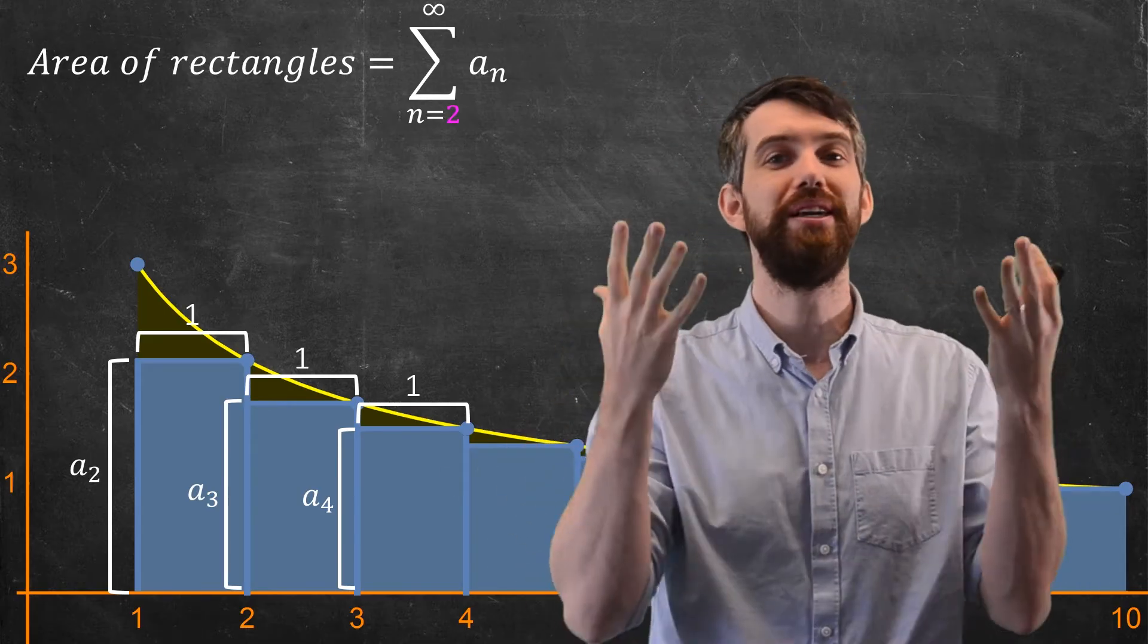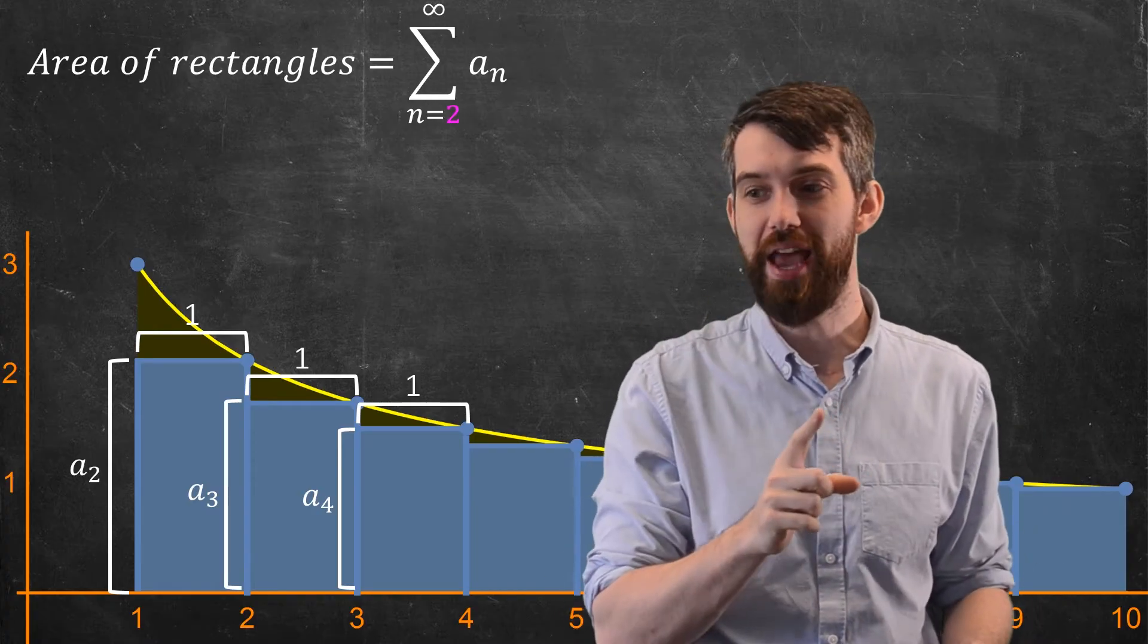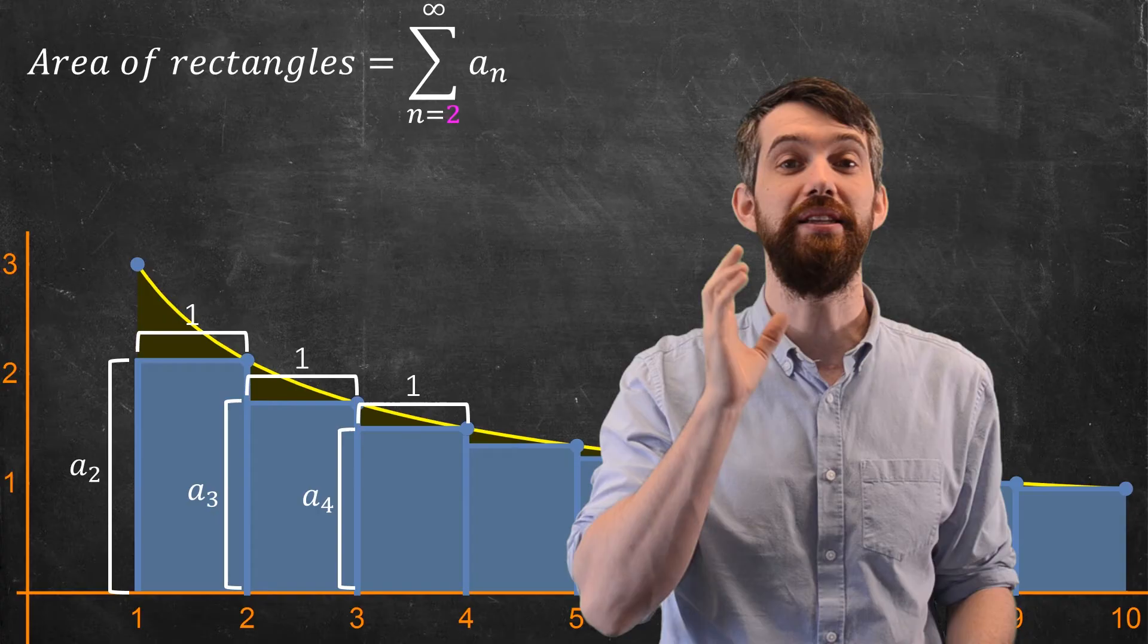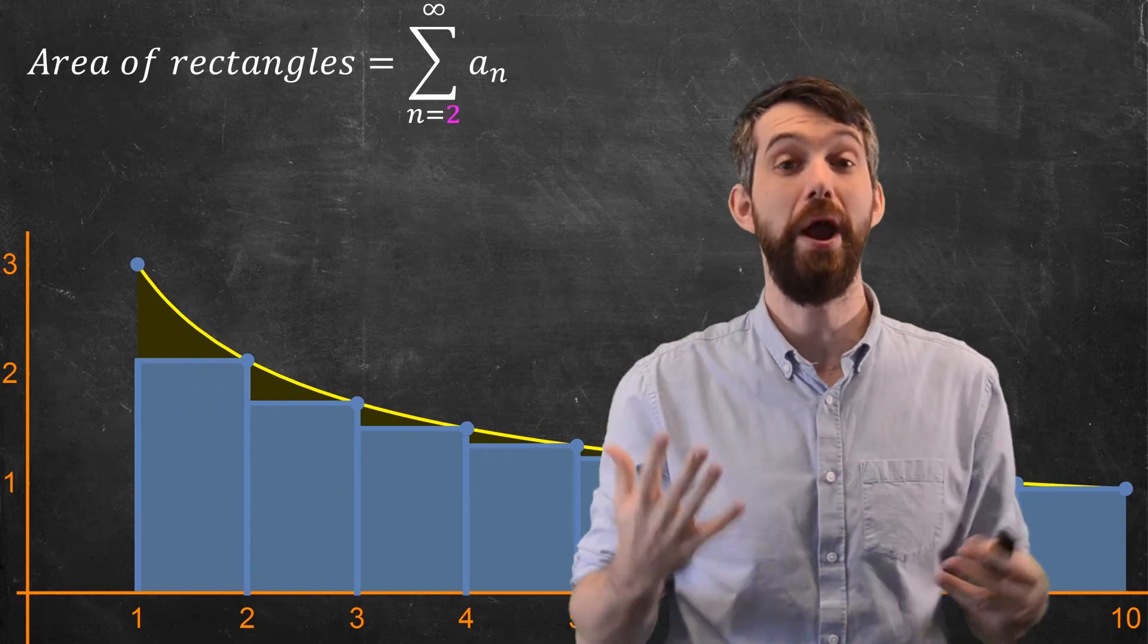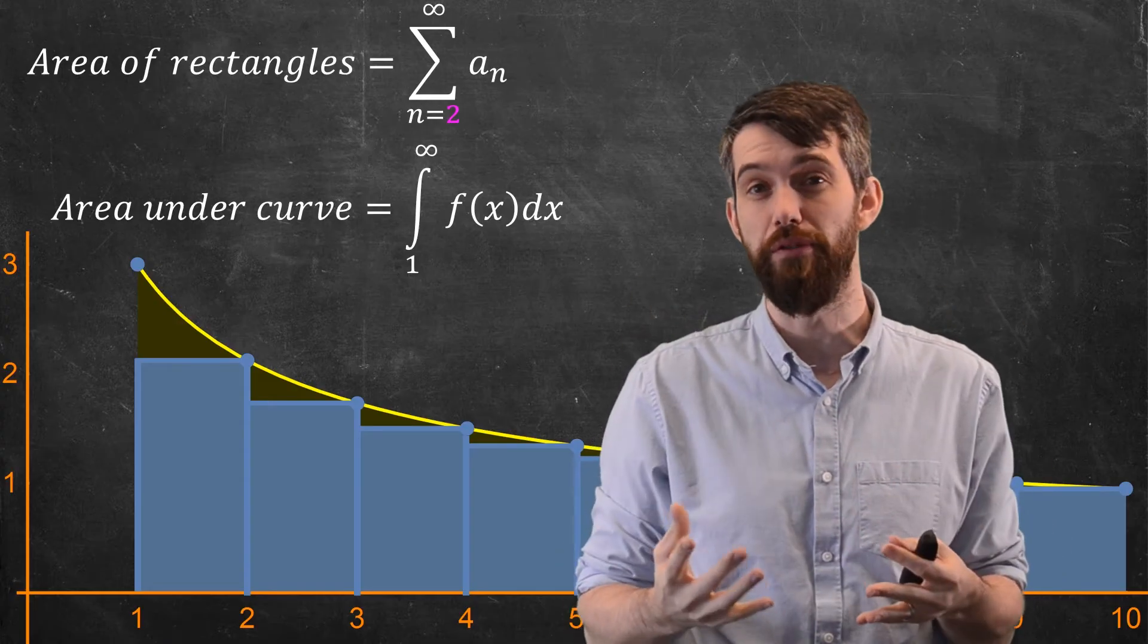So doing n equals 1, n equals 2, same difference. But it matters here from the perspective that I am going to contrast this with indeed the improper integral from 1 up to infinity. And for the improper integral from 1 up to infinity of f(x), that's the integral under the curve.